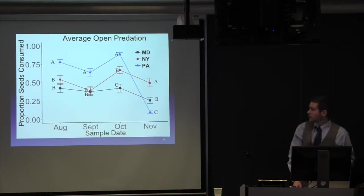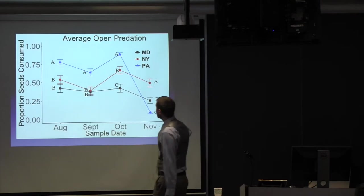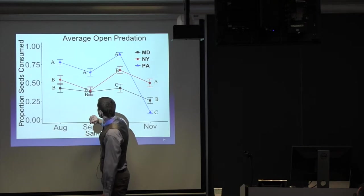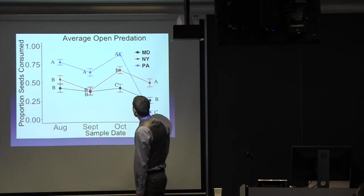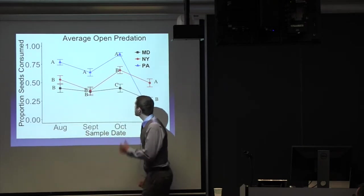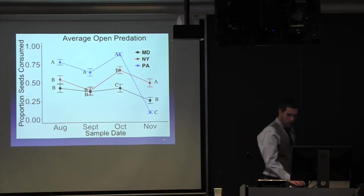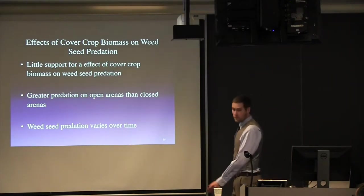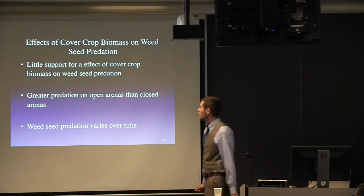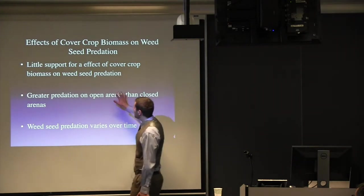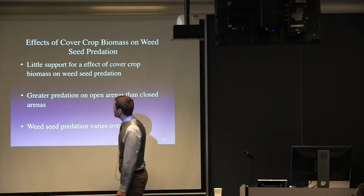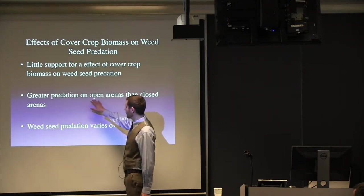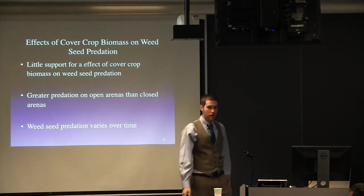Now, on the open arenas, it's a little less exciting. It varies slightly over time. And we did see some difference between sites. Pennsylvania, for three of those, had the greatest seed predation. So, what we can take away from the seed predation data is not much support for the effect of cover crop biomass on seed predation. We saw more on our open arenas, and it changes a little bit over time.